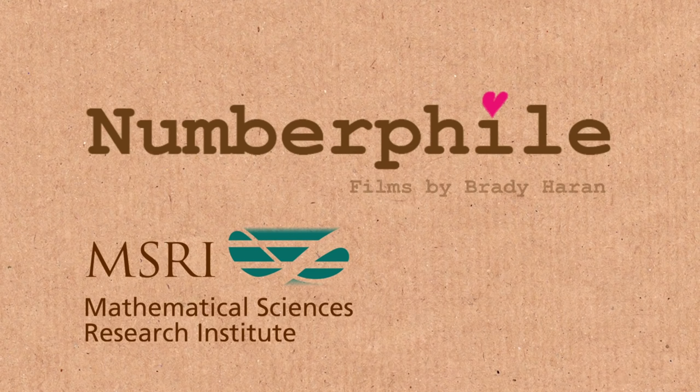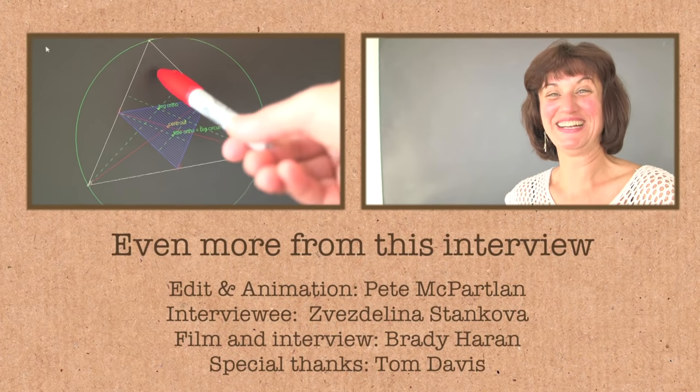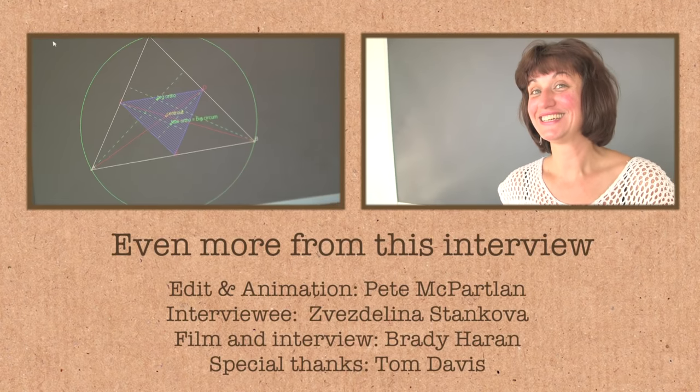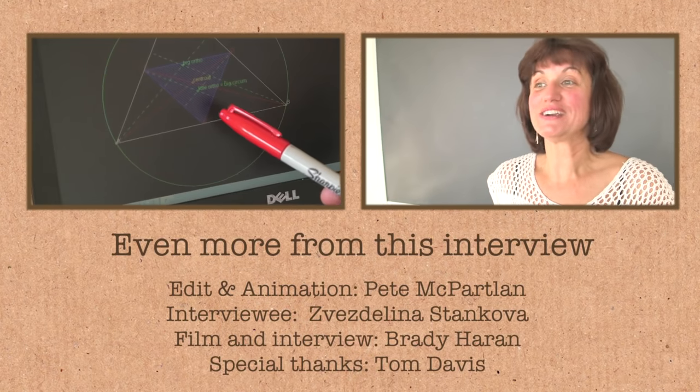From now on, once you see a special point for a triangle, you can always ask the question, does this point lie on the Euler line or not? One-fourth of the big one, and you can see its siblings on the sides. These are all congruent, four congruent triangles.